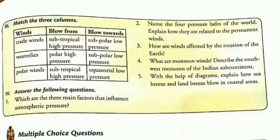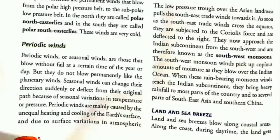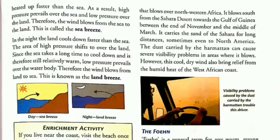Question 5: with the help of diagrams, explain how sea breeze and land breeze blow in coastal areas. Come to page 48 under the heading 'land and sea breeze.' Write the introductory line: land and sea breeze blow along coastal areas. First point: during daytime the land gets heated up faster than the sea. As a result, high pressure prevails over the sea and low pressure over the land. Therefore, the wind blows from the sea to the land — this is called sea breeze.